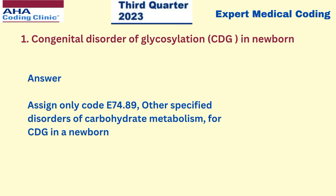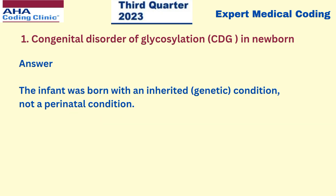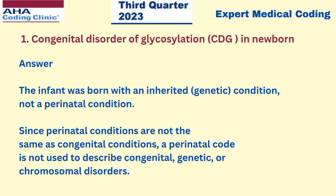The answer is no — we cannot use E7489 along with P9689. Assign only code E7489, that is other specified disorders of carbohydrate metabolism, for CDG in a newborn. We should not take code P9689, because the infant was born with an inherited genetic condition, not a perinatal condition. Perinatal conditions are not the same as congenital conditions, so a perinatal code is not used to describe congenital, genetic, or chromosomal disorders.